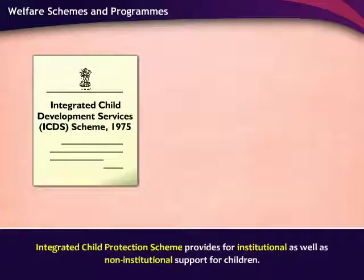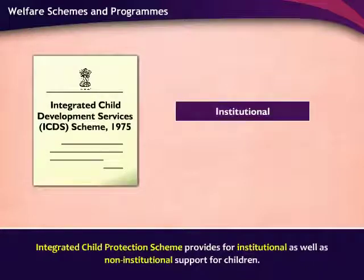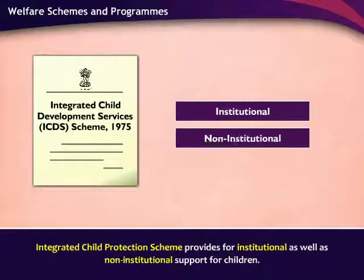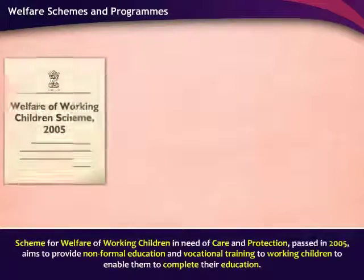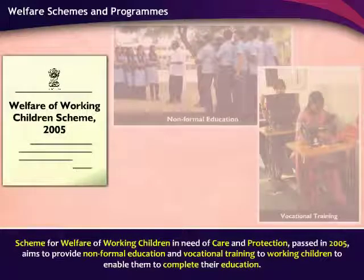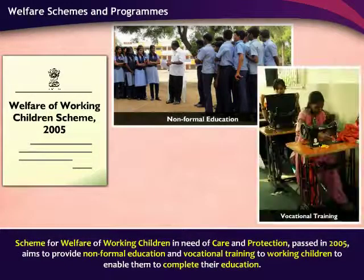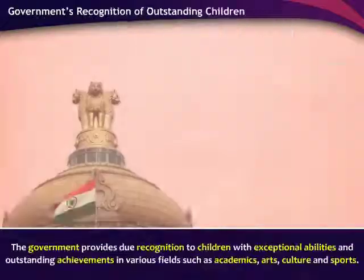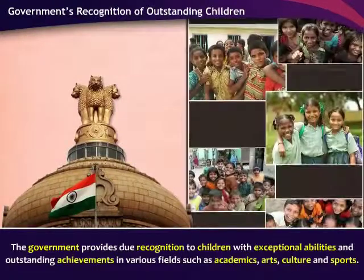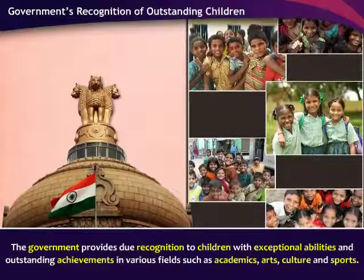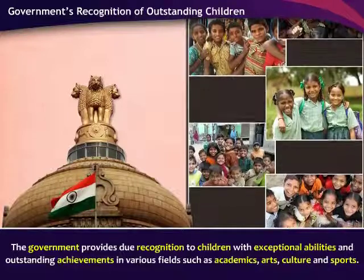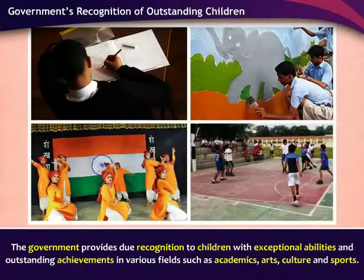The Integrated Child Protection Scheme provides for institutional as well as non-institutional support for children. The Scheme for Welfare of Working Children in Need of Care and Protection, passed in 2005, aims to provide non-formal education and vocational training to working children to enable them to complete their education. The government provides due recognition to children with exceptional abilities and outstanding achievements in various fields such as academics, arts, culture and sports.